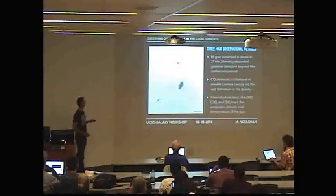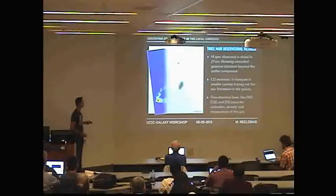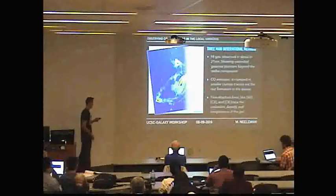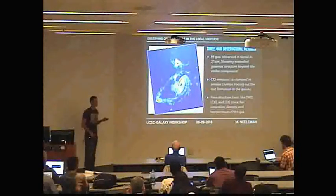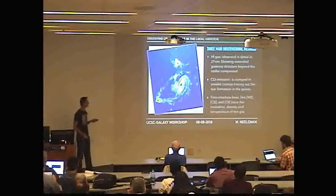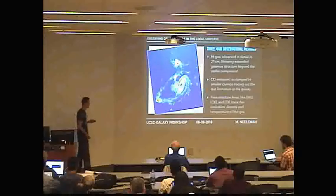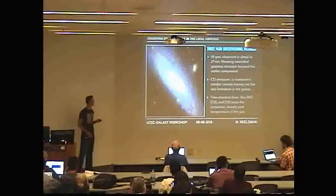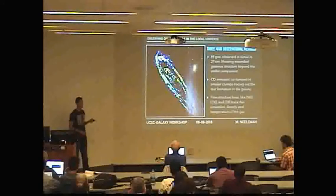Before I start, I'll do a quick overview of how we observe these things at low redshift. Here's a nice picture of a stellar environment with a galaxy right in the center. If we look at the 21-centimeter emission, we can see two things right away: it's very extended compared to the stellar emission, and we have wonderful detail. It really provides a nice way of studying gas in these low-redshift galaxies.